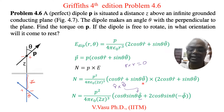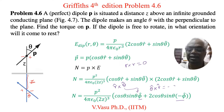Similarly, taking the second term (sin theta theta-hat) of P with the first term (2 cos theta r-hat) of E gives theta-hat cross r-hat, which equals minus phi-hat. Also, theta-hat cross theta-hat is equal to zero, and r-hat cross r-hat is zero. We will simplify this further.